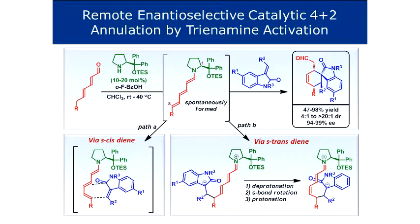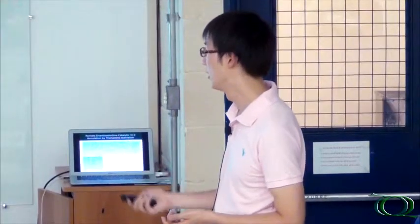Let's take the chemistry first and the understanding of why it works afterwards. If you monitor this reaction in an NMR tube, formation of the trinamine is spontaneous in the presence of acid; without acid it goes a bit slower but the trinamine species still forms. This was the first reaction we published in collaboration with Professor Chen in China. The 4+2 annulation product forms via trinamine activation proceeding through the cis-diene, generated by a simple bond rotation costing around 10 kcal/mol, which is fully reasonable at room temperature.